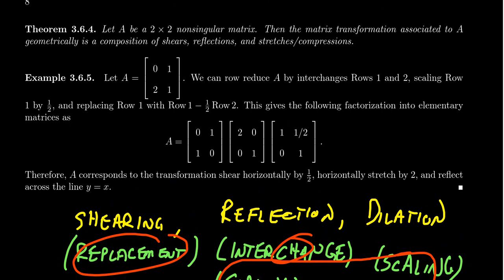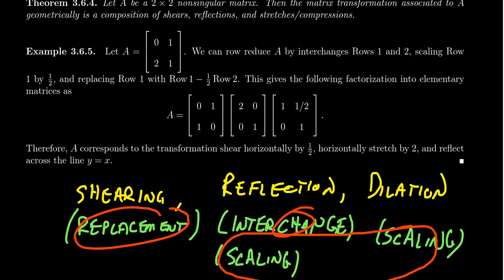And so this leads to the following observation. If A is a 2x2 non-singular matrix, so it has an inverse, then the matrix transformation associated to multiplying by A can be decomposed into some composition of shears, reflections, and stretches and compressions. And the basic idea here is that the matrix A can be factored into a product of elementary matrices, since it's non-singular, and each of these elementary matrices can be represented as reflection, shearing, or stretches and compressions. And so I want to show you an example of this.